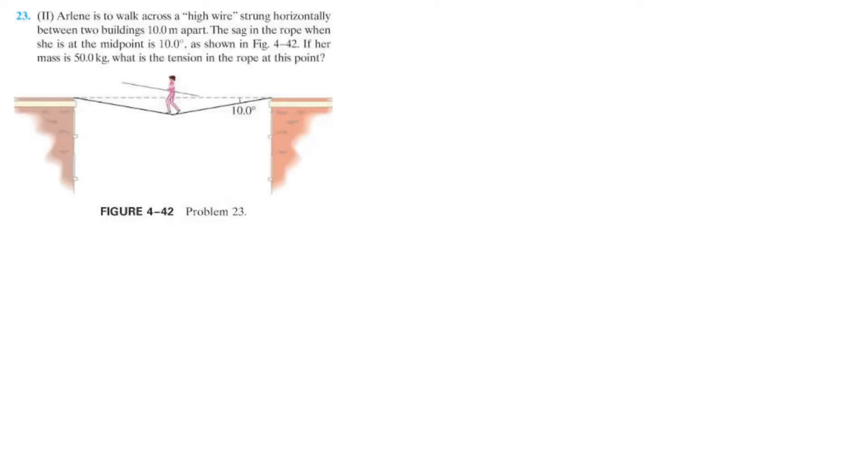This is part of one of the first kind of weirder, harder problems within your homework set. Arlene is walking across a high wire strung horizontally between two buildings 10 meters apart. The sag on the rope between their midpoint is 10 degrees, important.